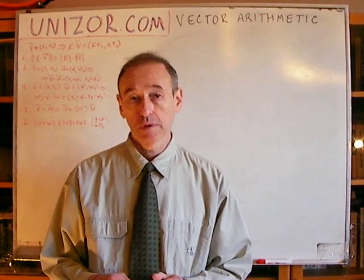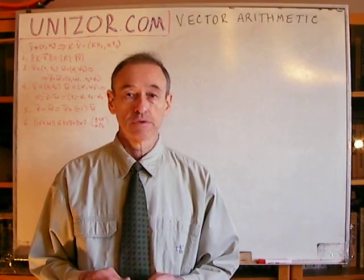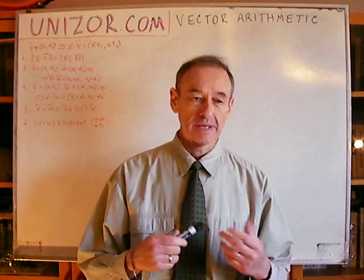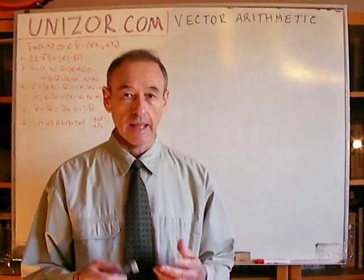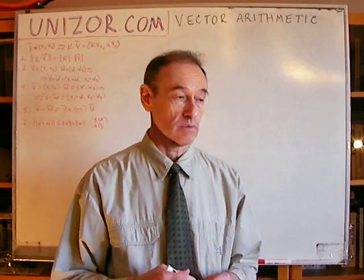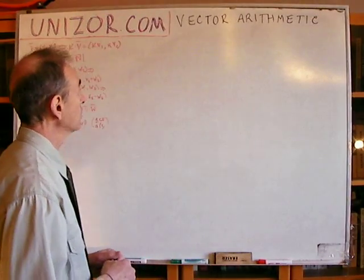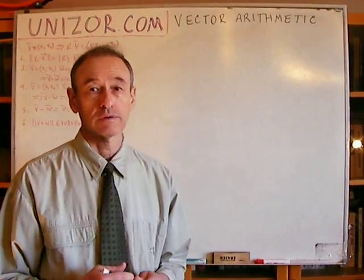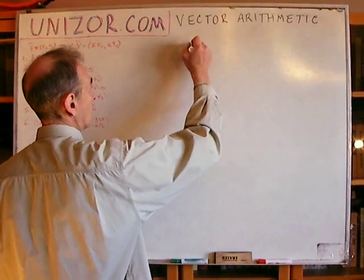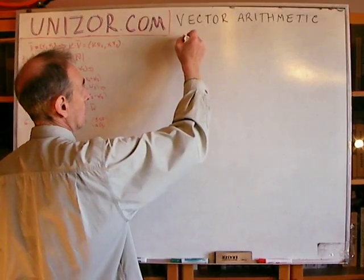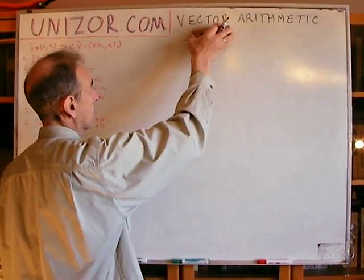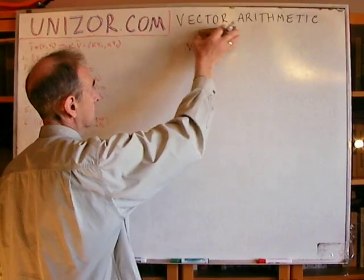These problems are quite trivial, but I would like to use this opportunity to tell about certain standard symbolics used in vector arithmetic. For vectors, I will usually use lowercase Latin letters with an arrow or just a bar on the top.